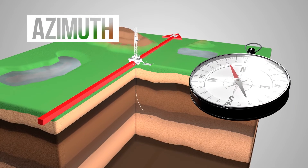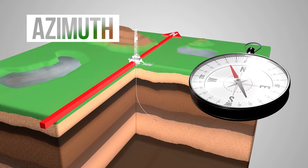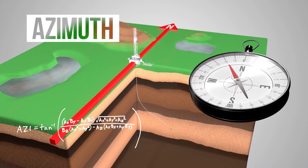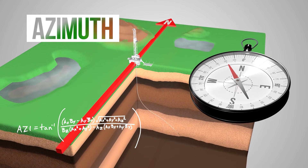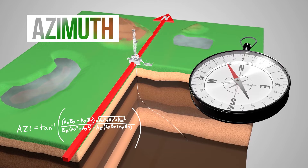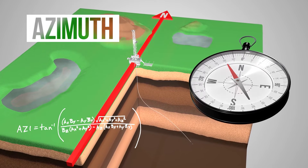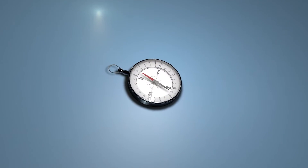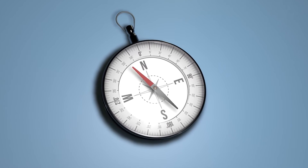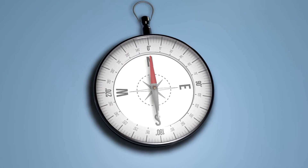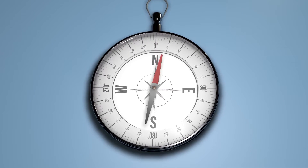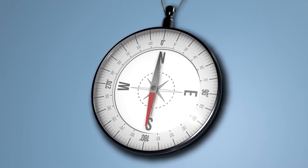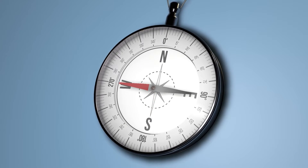Azimuth is the bearing direction from north to the projection of the survey point in the horizontal plane. Because the survey point is projected in the horizontal plane, the calculation of azimuth relies on both the magnetometer and the accelerometer sensor measurements. Azimuth ranges from 0 degrees to 360 degrees, with 0 and 360 degrees corresponding to north, 90 degrees to east, 180 degrees to south, and 270 degrees to west.